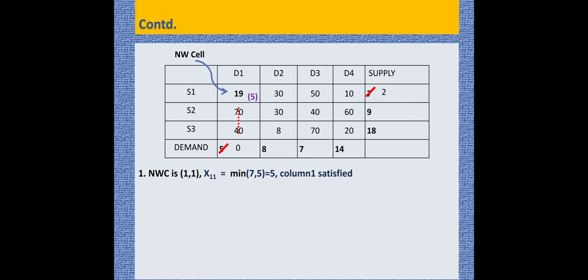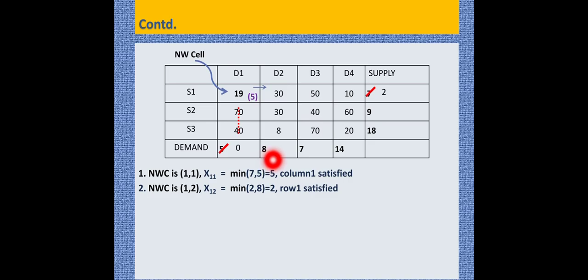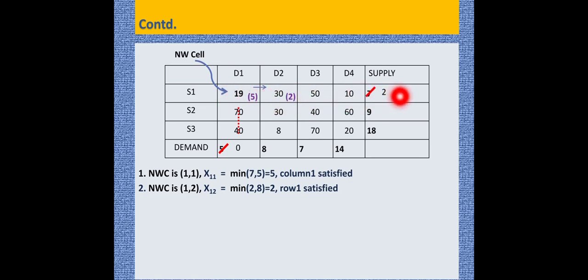The next Northwest Corner cell is identified. Here supply is 2 and demand is 8. We compare: minimum of 2 and 8 is 2. So 2 is allocated at that cell. Since 5 plus 2 equals 7, the supply is fully satisfied, and this row is struck off. The remaining demand is 8 minus 2, which equals 6.